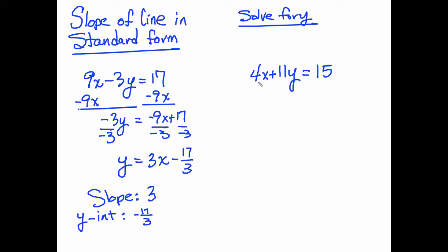Let's take the second equation, 4x plus 11y equals 15. We can subtract 4x from each side, and this would leave us 11y equals negative 4x plus 15.